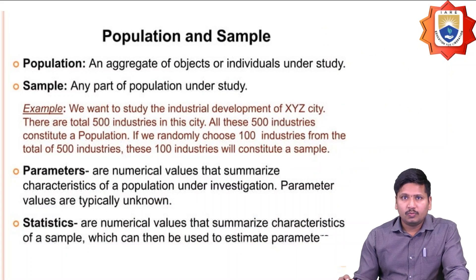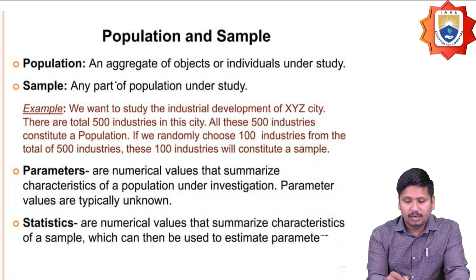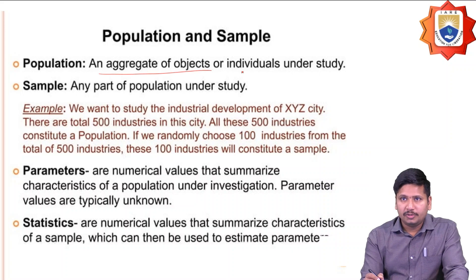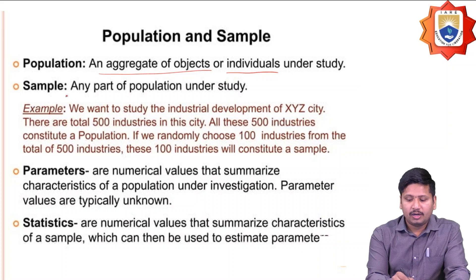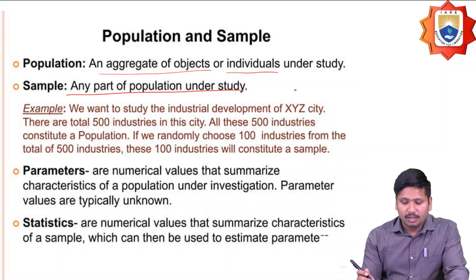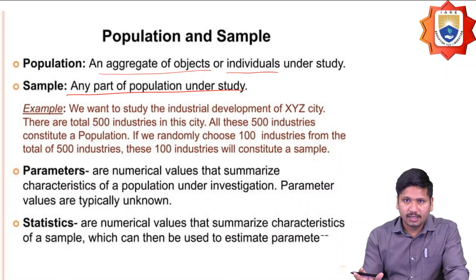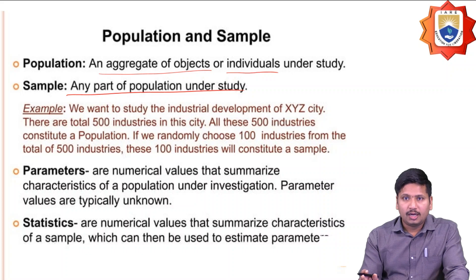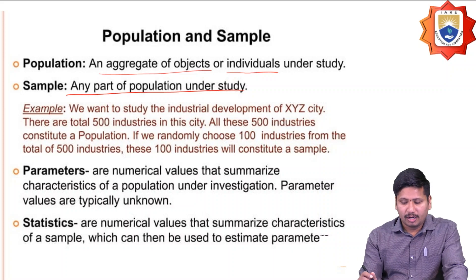Some key terminologies: population is the aggregation of objects or individuals that come under study. Sample means any part of the population that comes under study. Parameters are numerical values which summarize the characteristics of the population under investigation, and parameter values are typically unknown. Statistics are numerical values that summarize the characteristics of the sample, which can be used to estimate parameters.